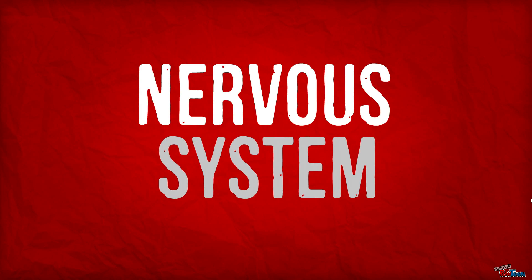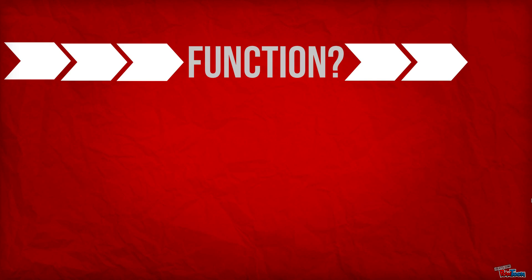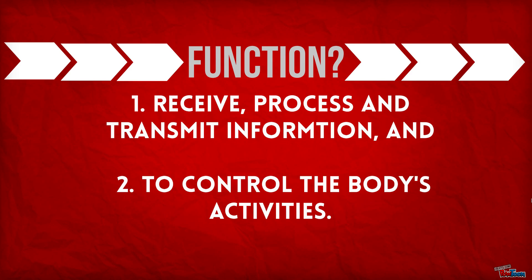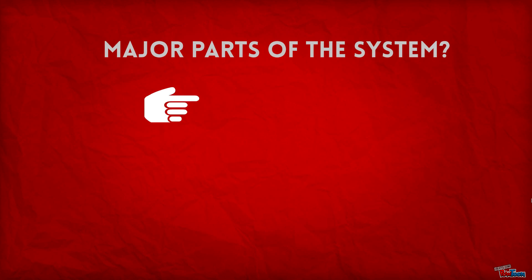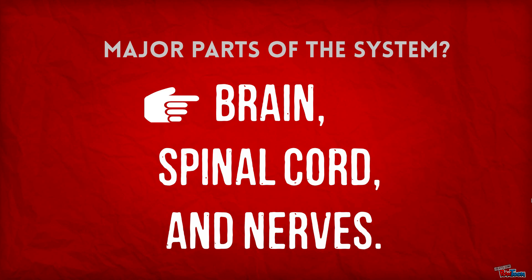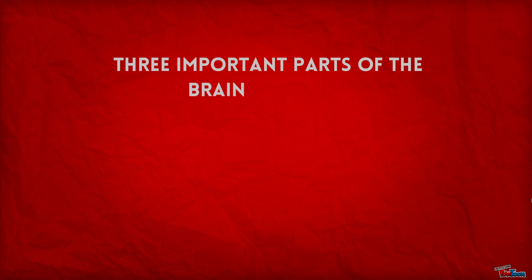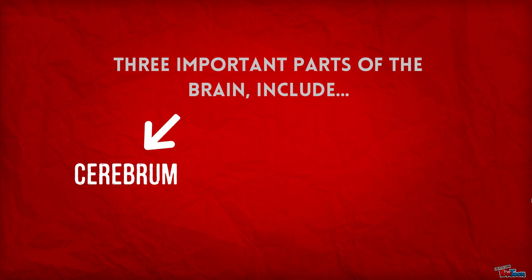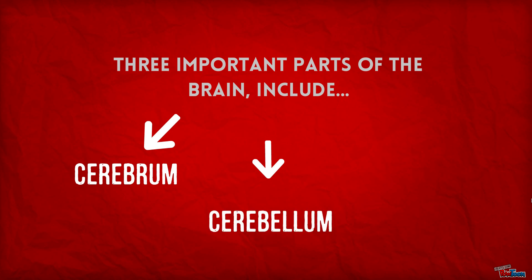The nervous system. Its function is to receive, process, and transmit information and to control the body's activities. The major parts of the system are the brain, spinal cord, and nerves. Three important parts of the brain include the cerebrum, the cerebellum, and the brain stem.